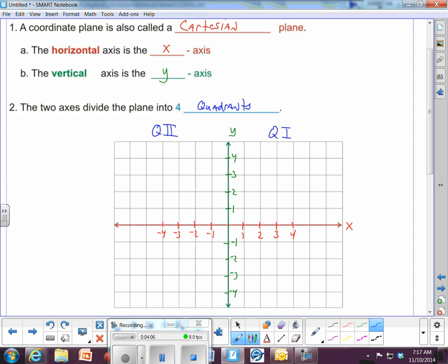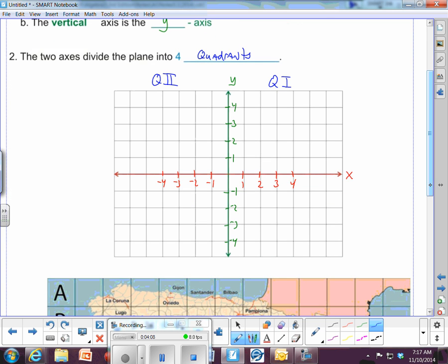So the upper right-hand corner is quad 1, and we go counter-clockwise. Quad 2 right there, quad 3 down below here, and quad 4 over here. Again, let me please tell you, you're supposed to use Roman numerals. So use the proper Roman numerals when doing your quadrants, Roman numerals.